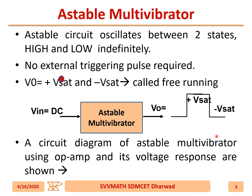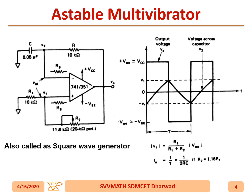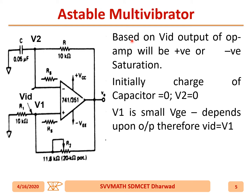The circuit diagram of the astable multivibrator using an op-amp and its voltage response are shown in the next slide. In this circuit diagram, we have a positive feedback as well as a negative feedback. We have a capacitor, and this is the waveform. Based on V_id, the difference between V1 and V2, the op-amp output will be either +Vsat or -Vsat.